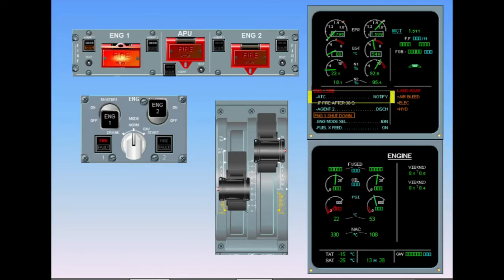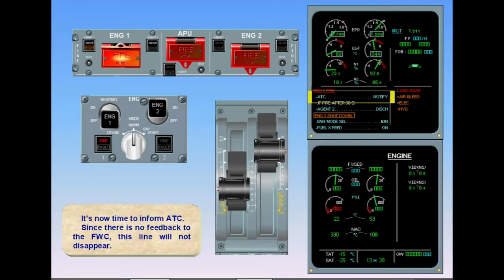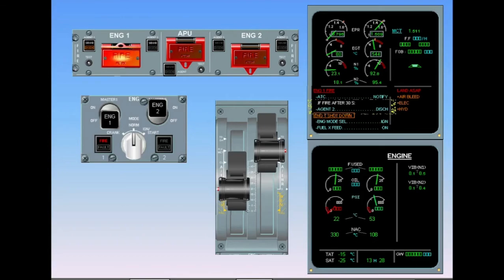It's now time to inform ATC. Since there is no feedback to the flight warning computer, this line will not disappear. All indications confirm that the fire is still burning. A second countdown now starts. This one is 30 seconds long in order to give the first agent enough response time.